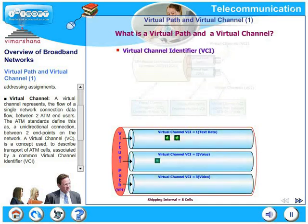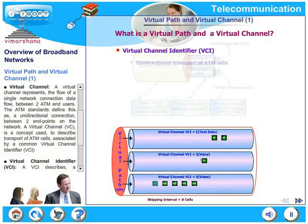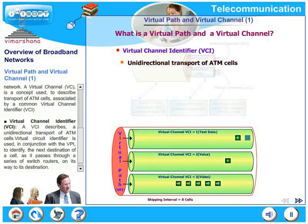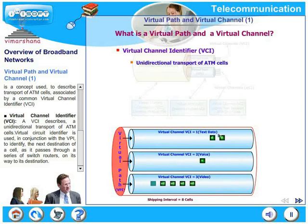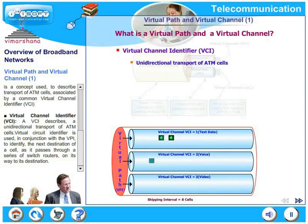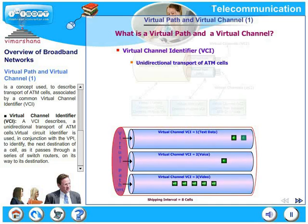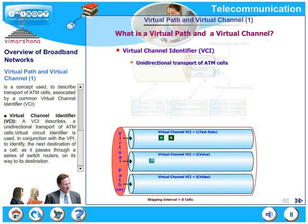A VCI describes a unidirectional transport of ATM cells. VCI is used in conjunction with the VPI to identify the next destination of a cell as it passes through a series of switch routers on its way to the destination. So the VCI-VPI combination identifies the next destination of a cell.